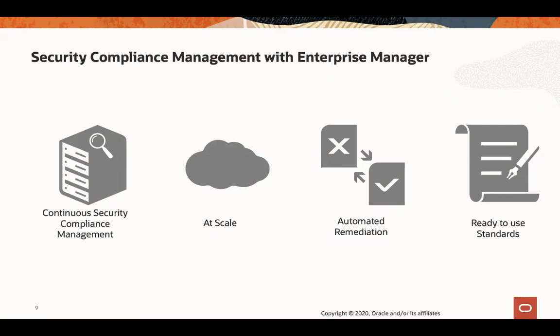You can have thousands of database targets, associate all those targets to one compliance standard, and get a security posture for all these targets in one go. Enterprise Manager automatically scans your databases for security compliance every 24 hours — of course, if your policy requires a faster frequency like every 12 hours, you can customize it. In case of violations, Enterprise Manager provides a recommendation for each violation to remediate, you can automate that remediation, and you will be notified about every violation for your analysis. You could do all this with ready-to-use compliance standards available out of the box with the database lifecycle management pack.